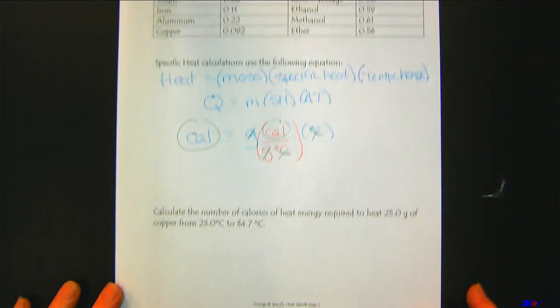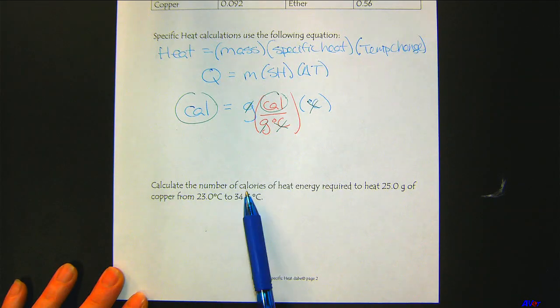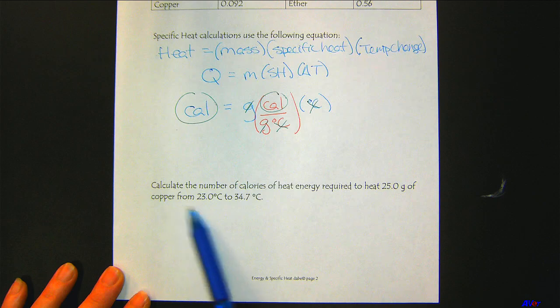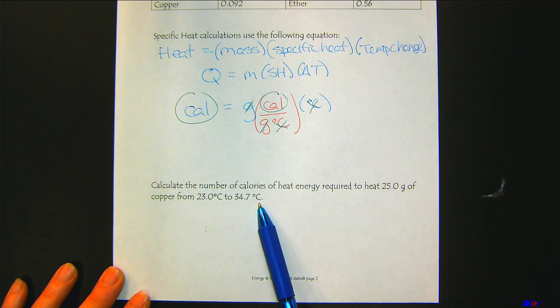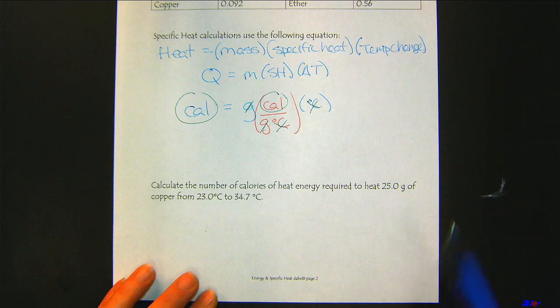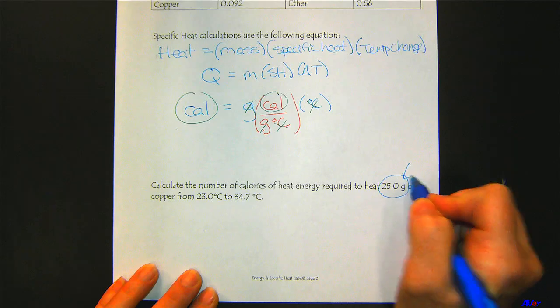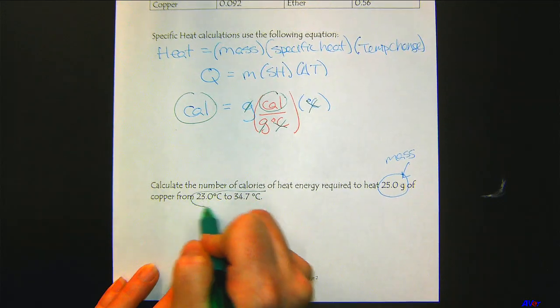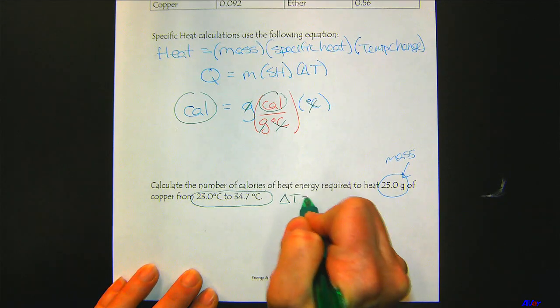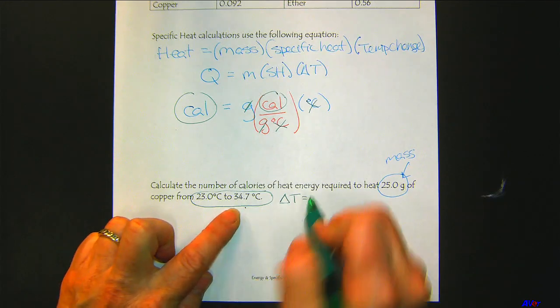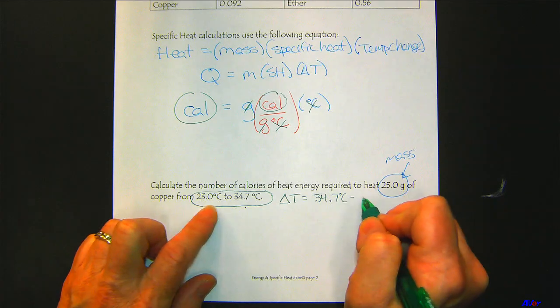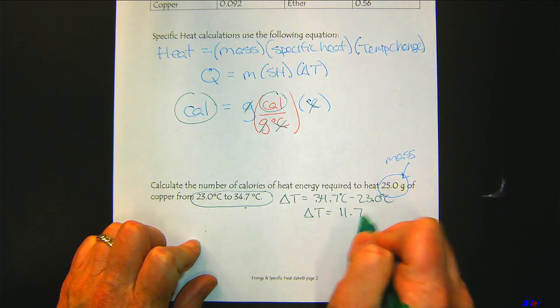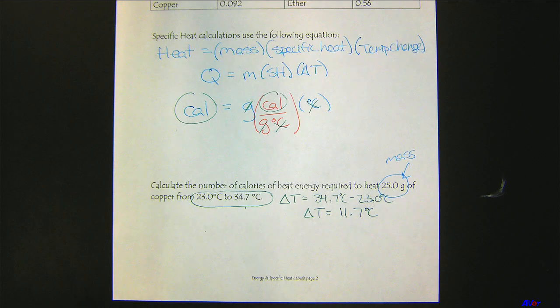Now let's get started on solving problems. Calculate the number of calories of heat energy required to heat 25 grams of copper from 23 degrees to 34.7 degrees C. The units come in handy. We look here, and the grams tell us this is the mass. And then here we have degrees C, so this is our temperature. So delta T - the final temperature is higher, we're raising the temperature. And then we subtract the lower temperature, and there's our delta T, 11.7 degrees C.